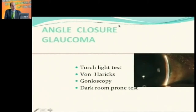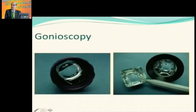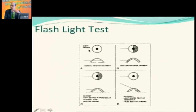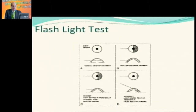For angle-closure glaucoma, the Van Herrick's test is a good method to pick up angle-closure suspects, but there is no substitute for gonioscopy. The flashlight test could be a test of choice in remote practice but is not a very good clinical indicator. When you throw a torchlight perpendicular over a flat iris you can visualize the other quadrant, but if the iris contour is convex, you will see a shadow on the other side, indicating the patient is probably a suspect.